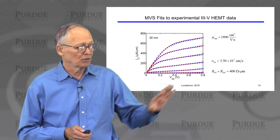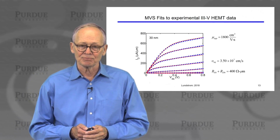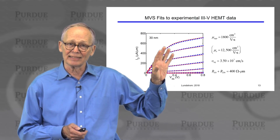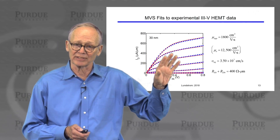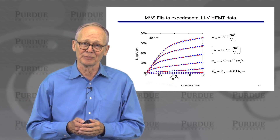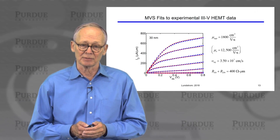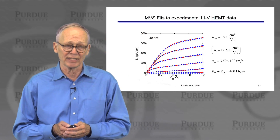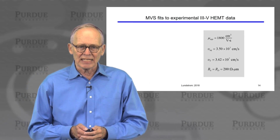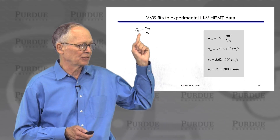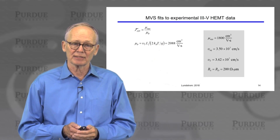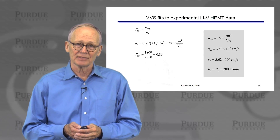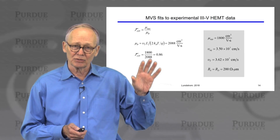Turning to the III-V data, the virtual source fits yield an apparent mobility of 1,800 cm²/V·s. Remember the bulk mobility of indium arsenide is enormously high, so this apparent mobility is roughly an order of magnitude lower than the bulk mobility — because of the ballistic mobility limit. The injection velocity deduced is about three times higher than for the silicon MOSFET. Computing the ballistic mobility — just over 2,000 — and taking the ratio, the linear transmission is over 80%, compared to about 33% for the silicon MOSFET. The higher transmission reflects indium arsenide's far higher mobility.